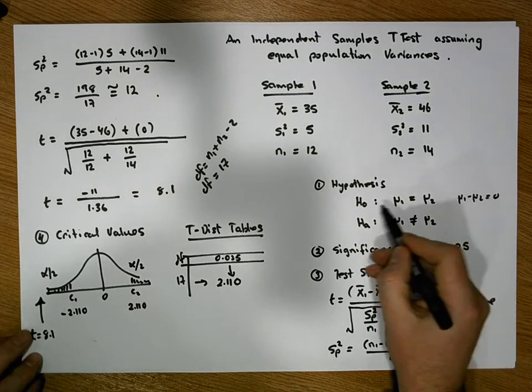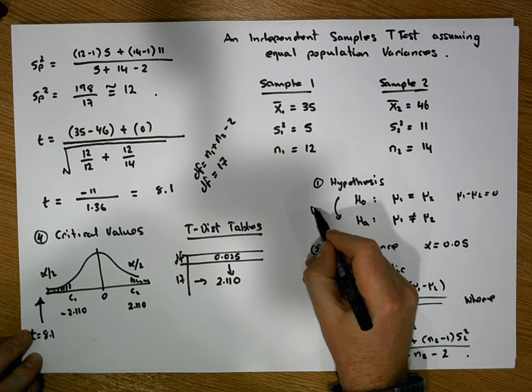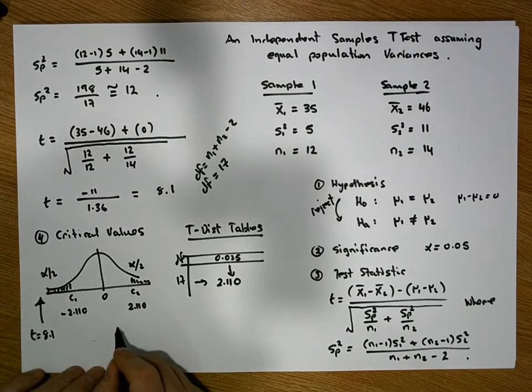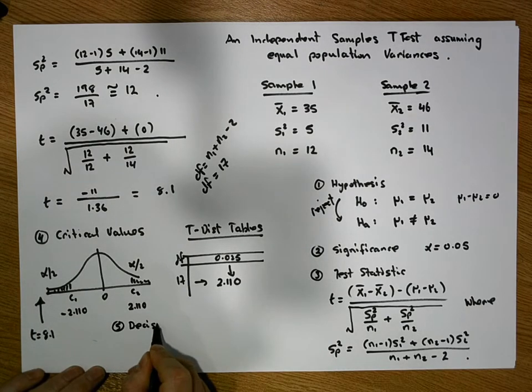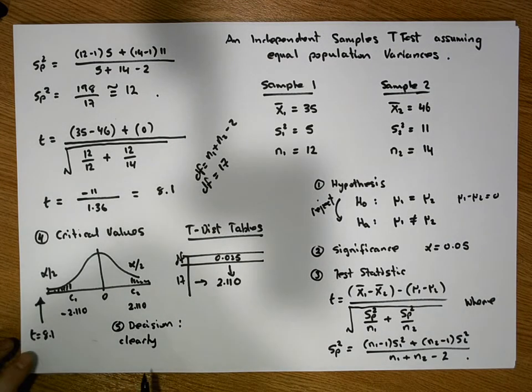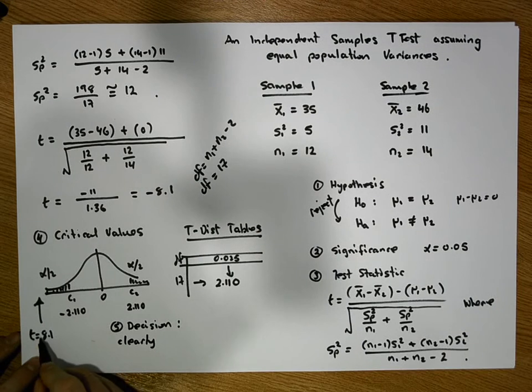So we reject, we reject H0 in favor of HA. But let's write that down. Step five, our decision. And our decision is going to be clearly. Now, sorry, this would be a negative t value here, minus.